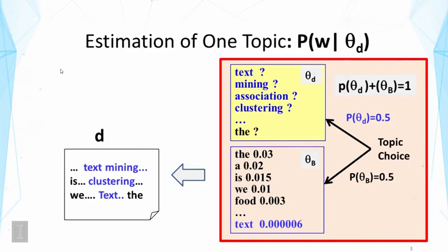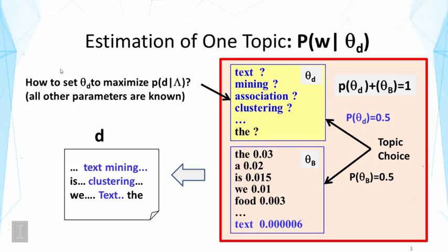This is now a familiar scenario of using a two-component mixture model to try to factor out the background words from one topic word distribution. We're interested in computing this estimate, and we're going to adjust these probability values to maximize the probability of the observed document. Note that we assume all the other parameters are known. The only thing unknown is these word probabilities given by theta sub d. In this lecture, we're going to look into how to compute this maximum likelihood estimate.